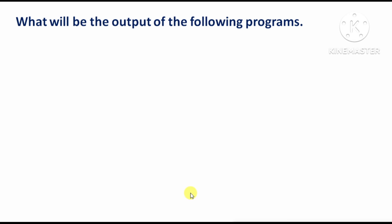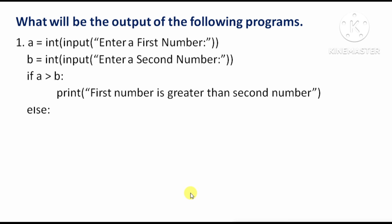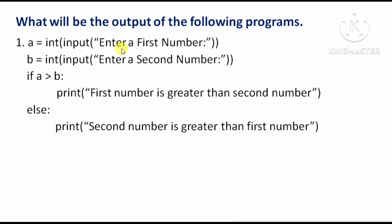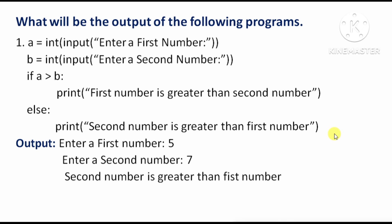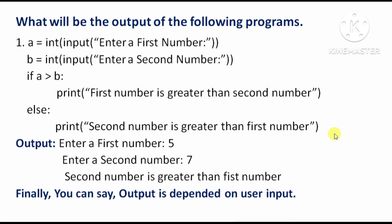What will be the output of the following programs? Here, the program takes A and B values as user input. The output will change according to the values the user enters. For example, if the user inputs first number 5 and second number 7, the output will be 'second number is greater than first number'. So the output depends on user input.